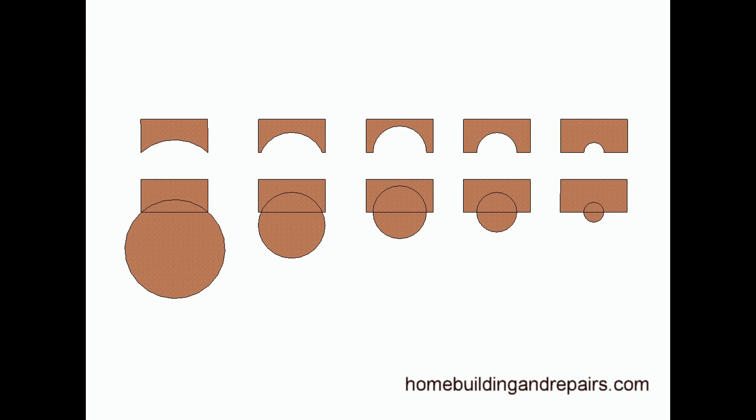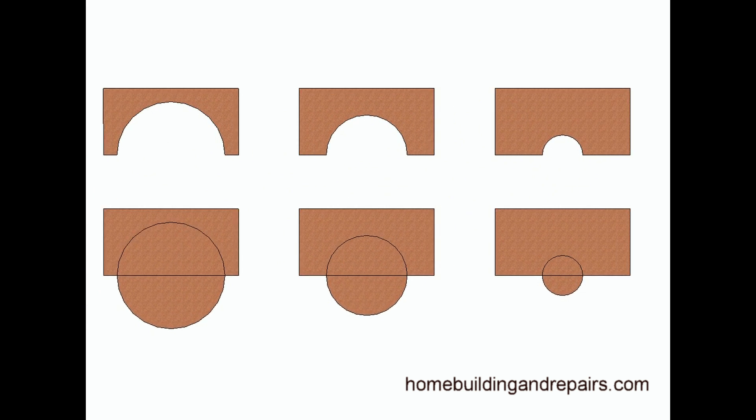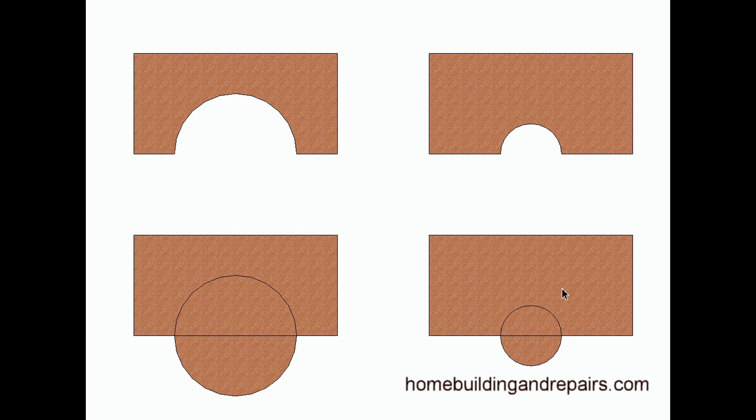But here we can see the cutouts. Let's go ahead and zoom in on that. So if we had a part of the building that we wanted to look like this, we could start with the center of the arch, the radius, go to the center of the shape and then draw a three foot circle. This would be a half of a circle for something like this.